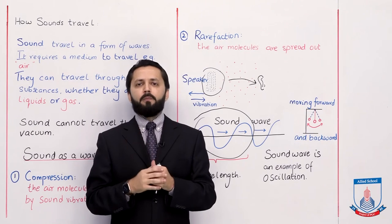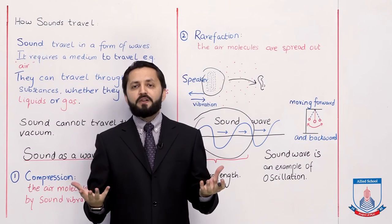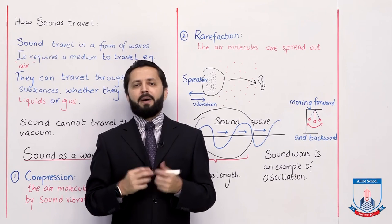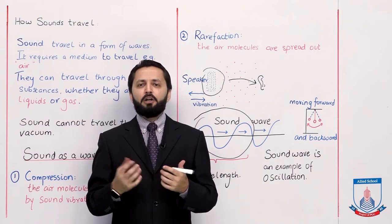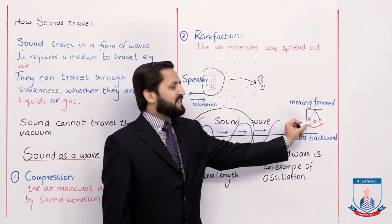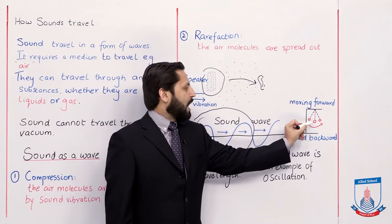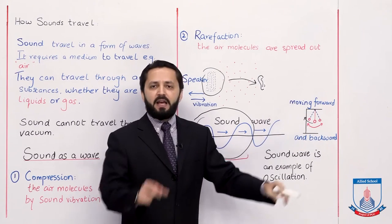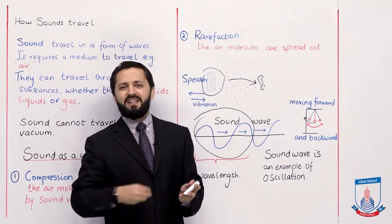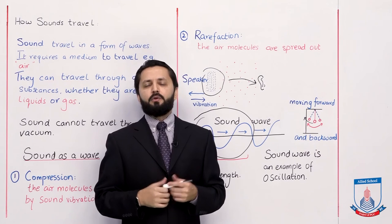Therefore, this to and fro movement — which we can also call oscillations — an oscillation is like a pendulum. A pendulum has a string with a mass attached. If I pull it toward me and release it, it moves to and fro. This is how sounds are normally made and travel through any medium.